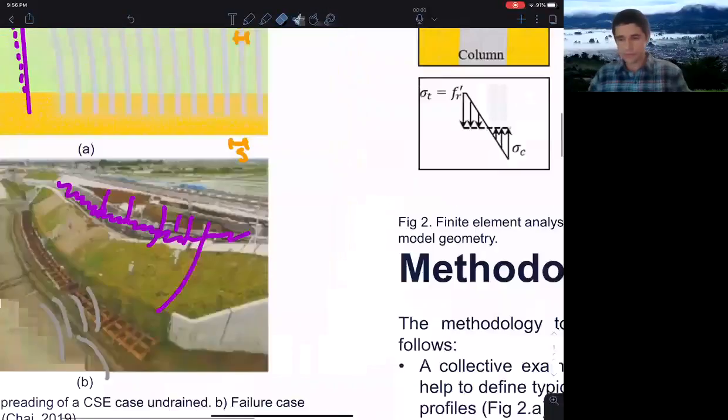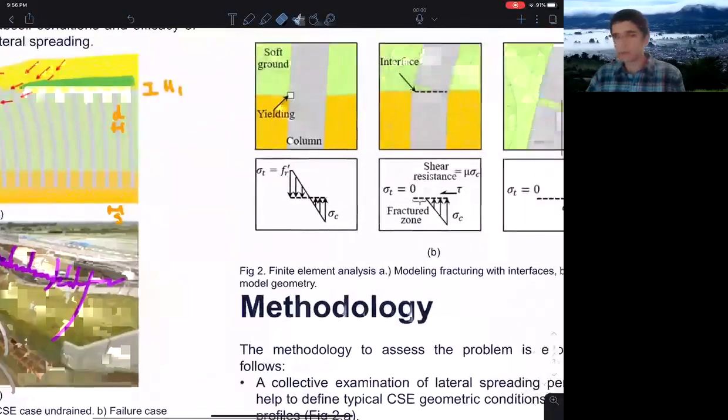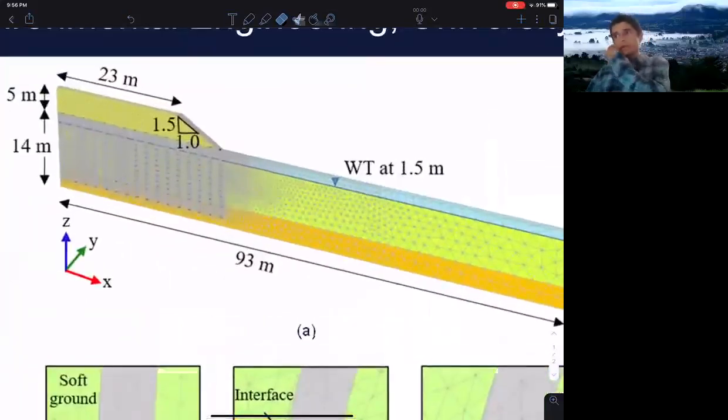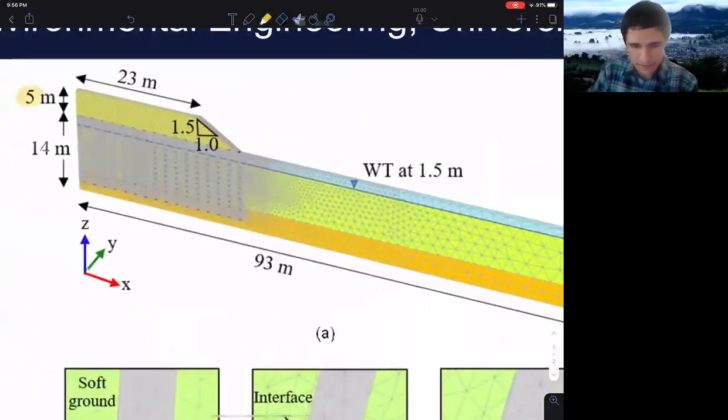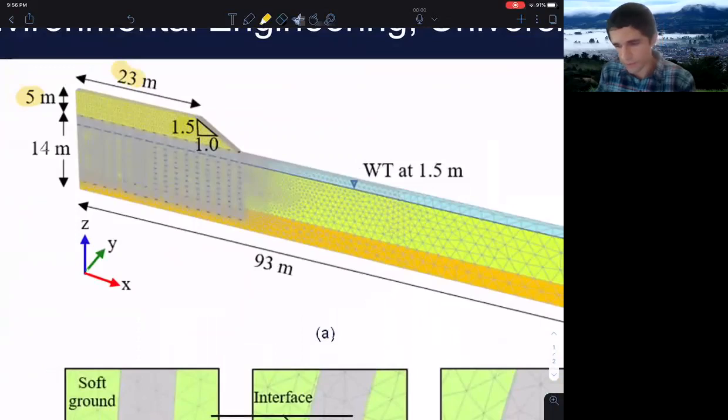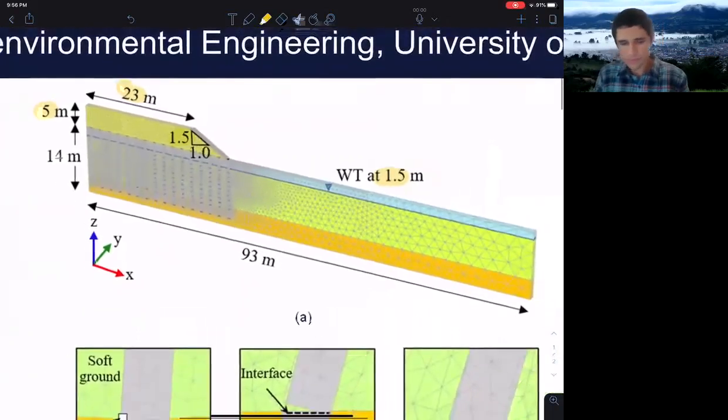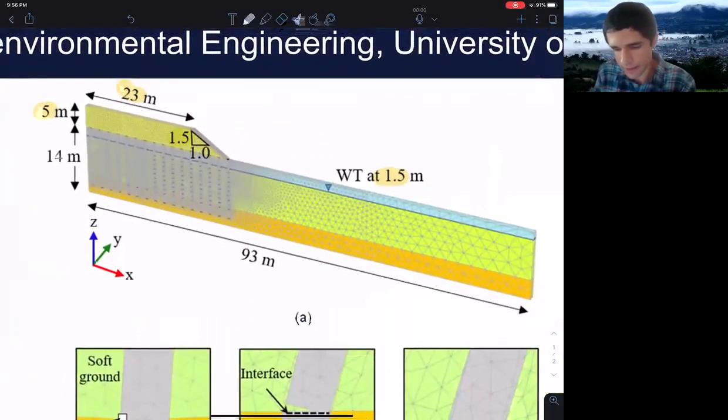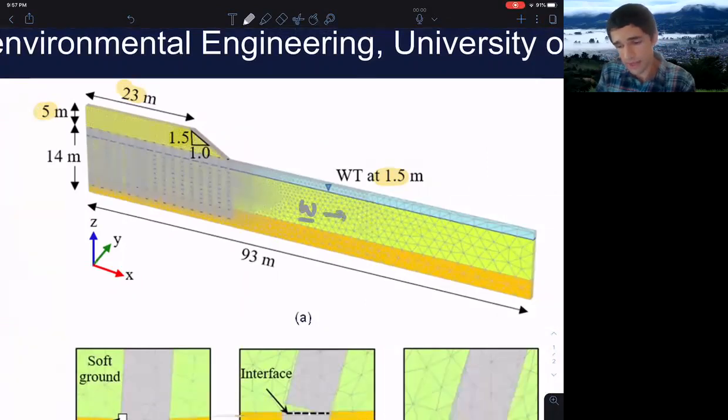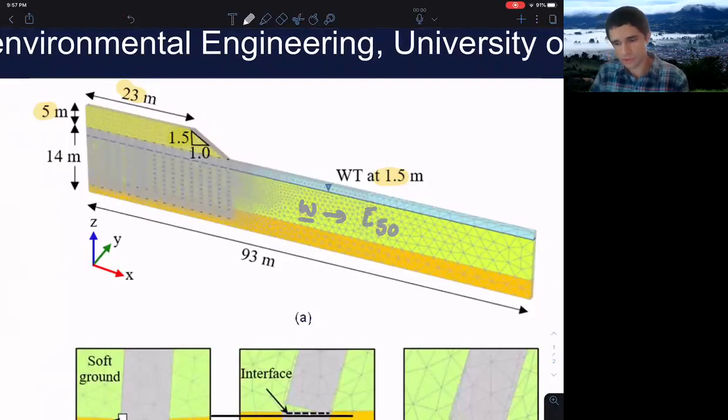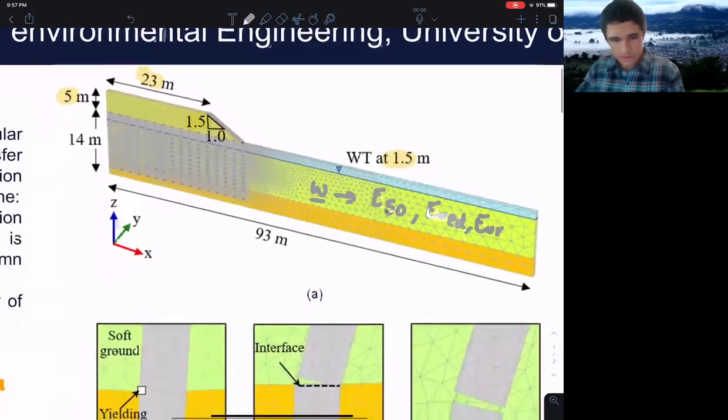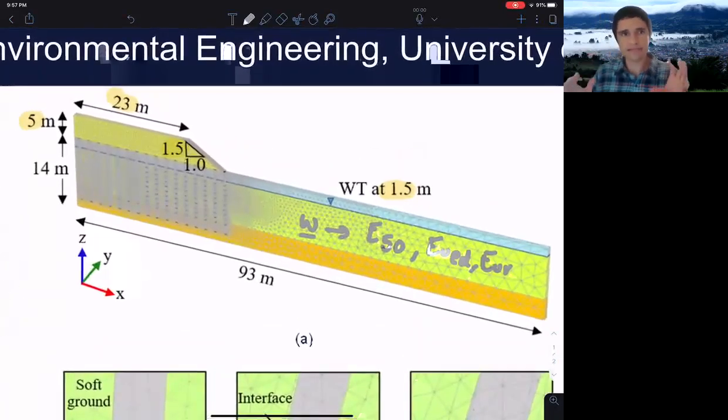The next step is the methodology. We made a collective analysis of field case scenarios in which we can determine typical dimensions like the fill height, slope angle, and depth of the water table. We also found typical water contents of the soft soil. With this, we could make a parametric study in which we can vary the E50 hardening soil model, the stiffness models, the oedometer, and the unload and reloading parameters. So I made a parametric analysis based on typical column geometry and subsoil conditions.